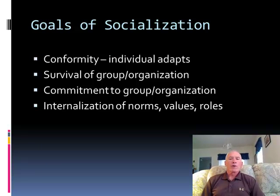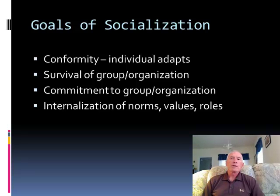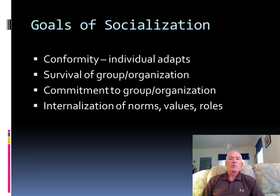There are goals of socialization, typically not formally stated, but when we examine socialization we can discern certain goals. The most important is conformity. Typically individuals are asked to adapt to the group — in other words, to conform, to behave like the group, to believe like the group, and act like the group.